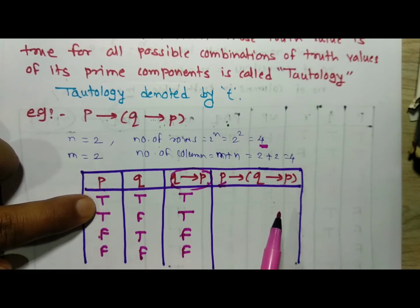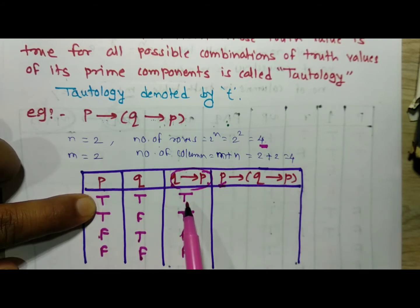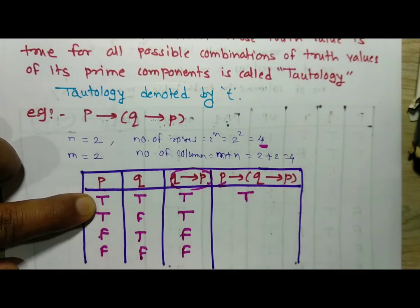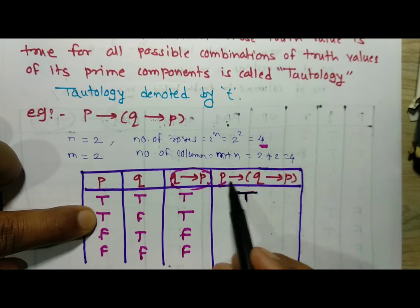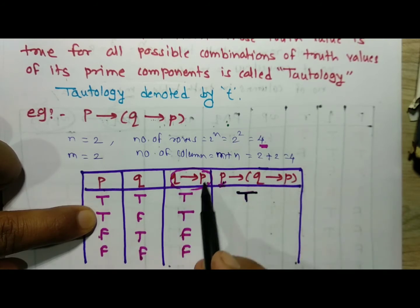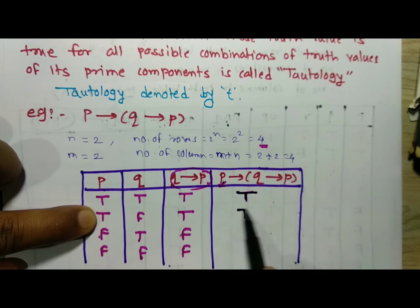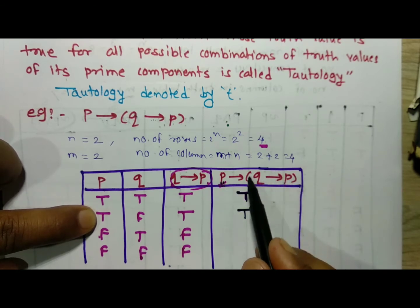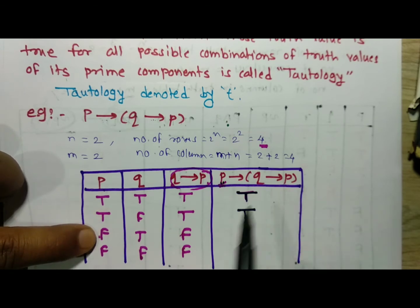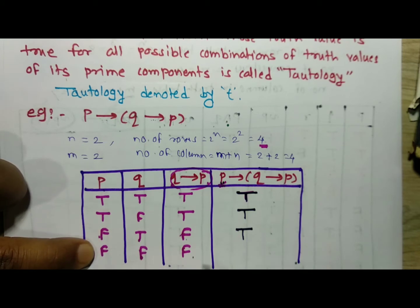Now for the complete statement p implies (q implies p): p is the first statement and q implies p is the second. Applying the implication rule — first statement true, second statement true gives true; first true, second true gives true; first true, second false gives false... wait, checking each row: true-true gives true, true-true gives true, false-false gives true, false-true gives true.